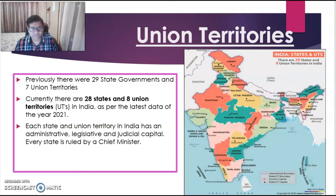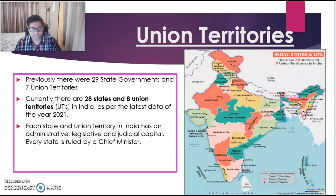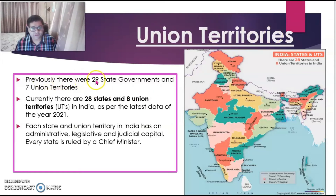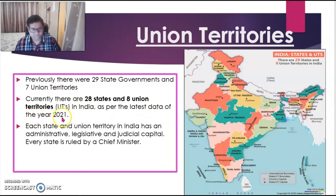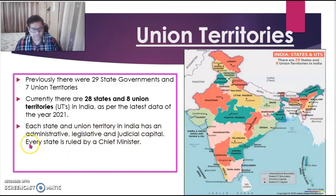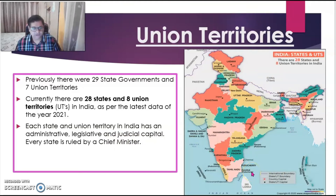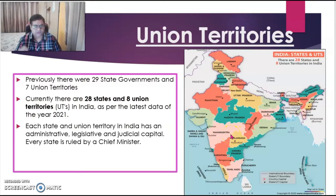Now that you have seen the explanation of Part 2 very closely, let us recap what we have learned today and see some illustrations. Our first topic was Union Territories. Previously there were 29 state governments and 7 Union Territories, but currently there are 28 states and 8 Union Territories in India as per the latest data of the year 2021. Each state and Union Territory in India has an administrative, legislative and judicial capital, and every state is ruled by a Chief Minister. Here you can see the map of India. The complete list of the 28 states and Union Territories is given in the description below — you can click on the link.